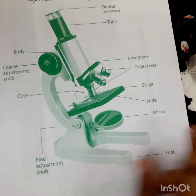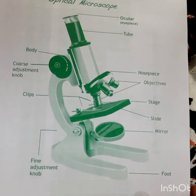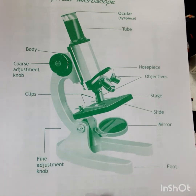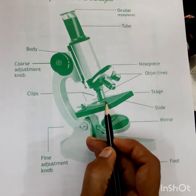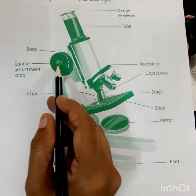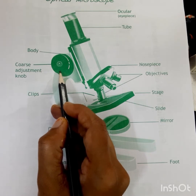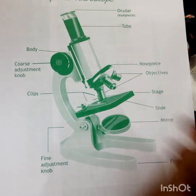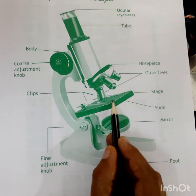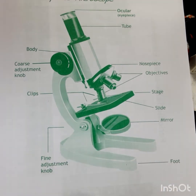This is your compound microscope. A microscope is an instrument that can magnify any object so we can see it in a larger view. Here you can see the eyepiece, from where we observe the object kept on the stage. This is the tube, the body, and this is the coarse adjustment knob, which is used for high and low magnification. This is the clips, objective, nose piece, stage, and slides — you have to put the slides here to observe the object. This is the mirror and this is the fine adjustment knob.